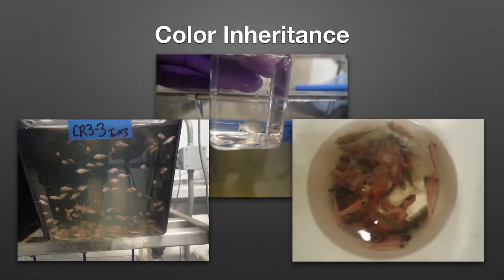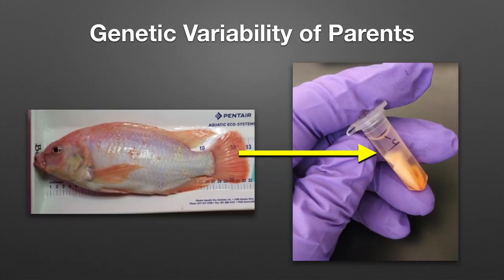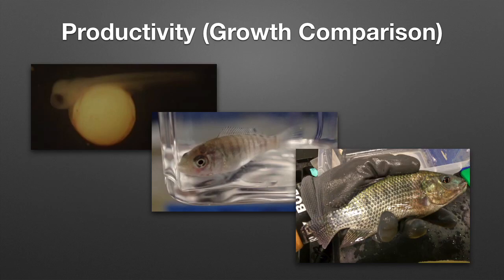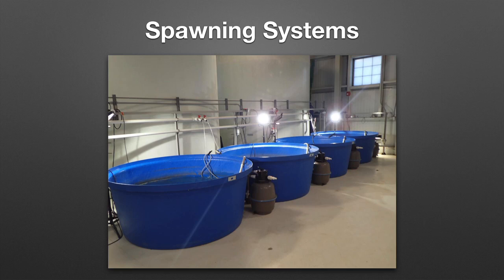We are also looking at color inheritance of red and dark fish — red fish are important because some customers prefer this pigmentation. We study the genetic variability of the parents and have performed research on growth comparison of four different crosses. We spawned male and female broodstock, collected eggs, and fed them from fry up to about 20 grams, at which point we stocked an experimental system with four crosses. These spawning systems are composed of one tank, one biofilter, one pump, air, and means of controlling temperature and light.